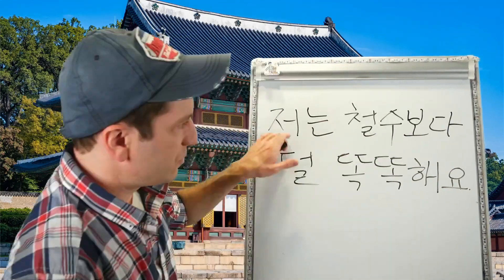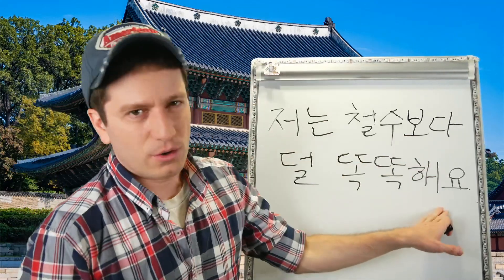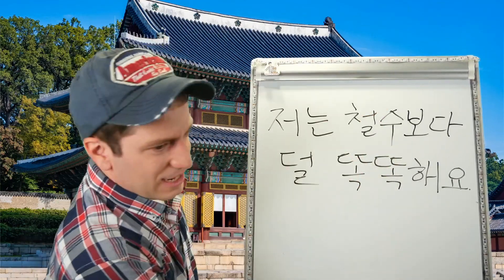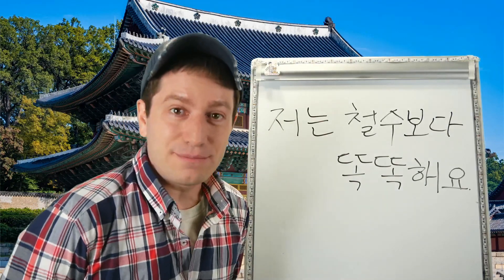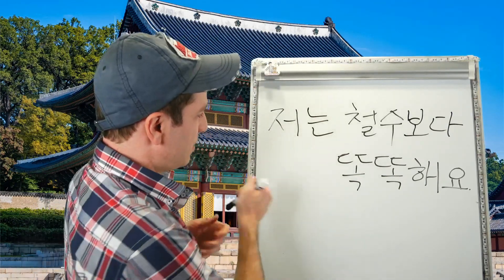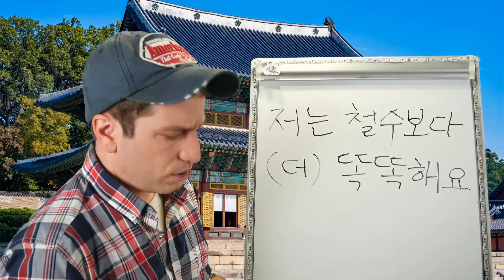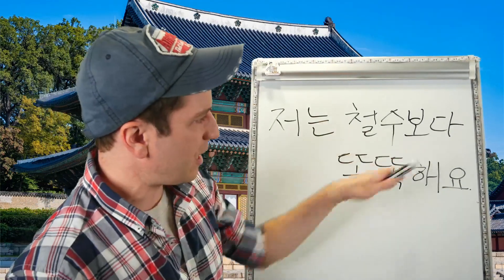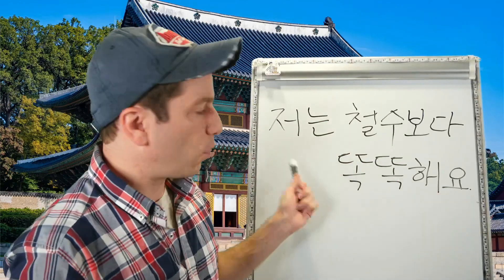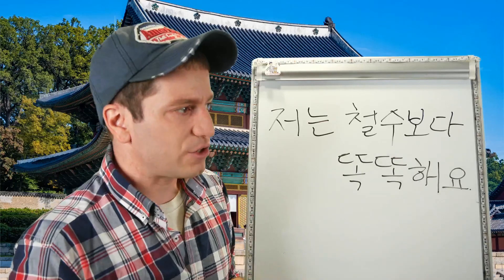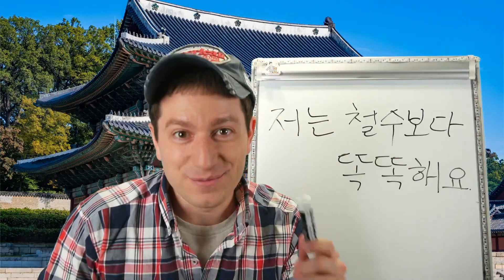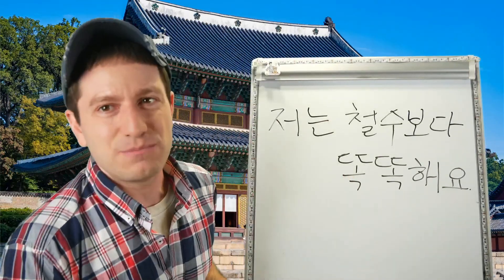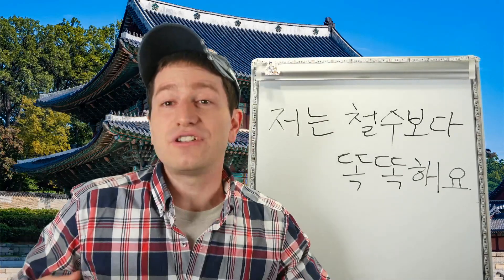You could also say 저는 철수보다 덜 똑똑해요, meaning 'I am less smart than 철수.' Note that the 더 after 보다 is actually 100% optional. So you could say 저는 철수보다 똑똑해요, and it still means 'I am smarter than 철수,' because you're saying 'I'm smart when you compare me to 철수,' which implies the same thing. But if you want to say less, you must use 덜.